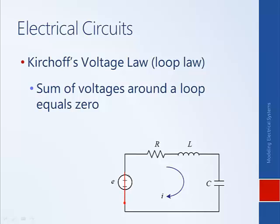Defining our starting point as ground — zero volts — as we cross the voltage source (a battery), there is a jump in voltage of E volts. Continuing around, crossing the resistor causes a voltage drop of IR according to Ohm's law. The voltage drop across the inductor is proportional to the rate of change of current: L times dI/dt. Finally, crossing the capacitor, the voltage drop is proportional to 1/C times the integral of the current, representing the charge accumulated on the capacitor.